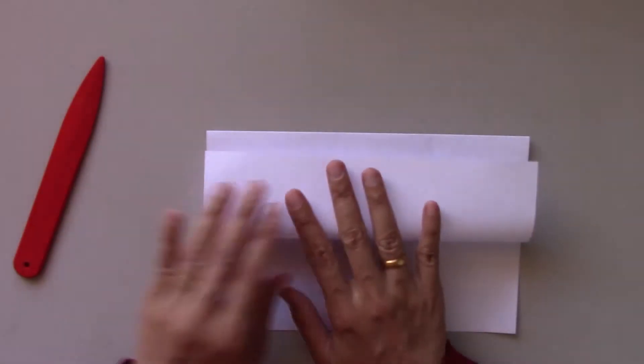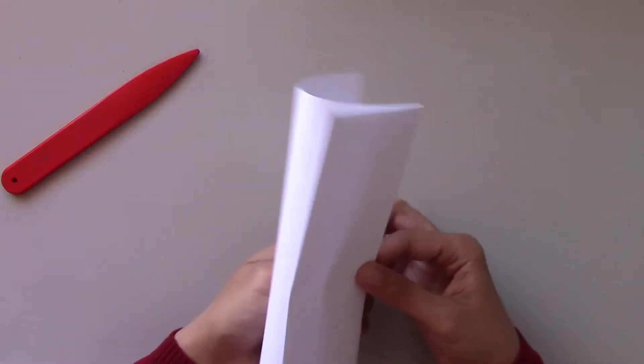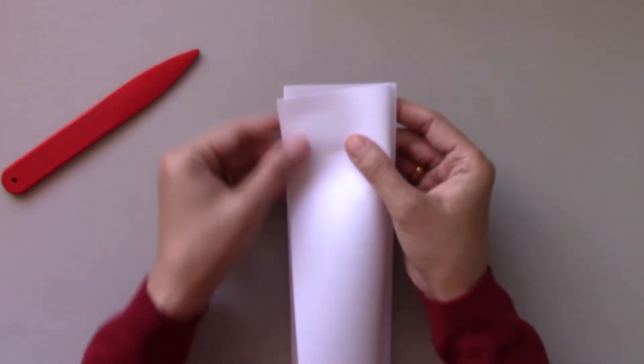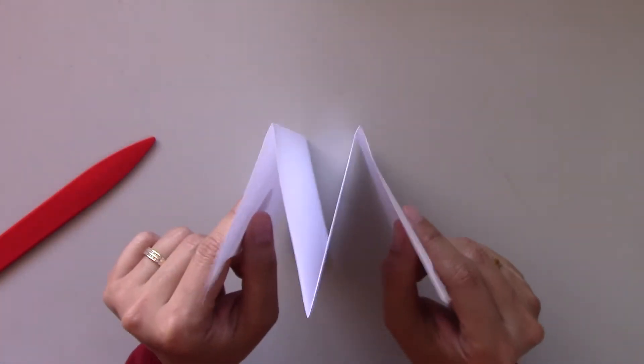Then fold in half one side and score again. Flip the other side, fold and score. It should look like the letter M from this side.